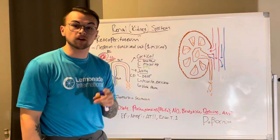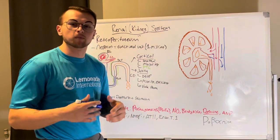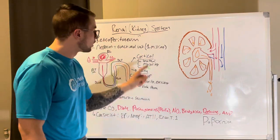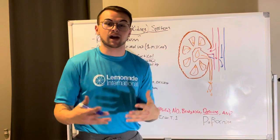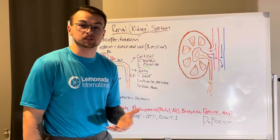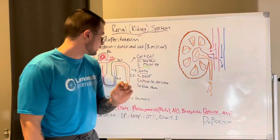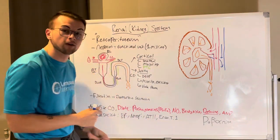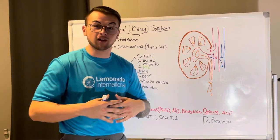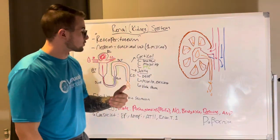There are two types of nephrons: cortical and juxtamedullary. Cortical nephrons are shallow — near the surface — and make up about 85% of our total nephrons. They have peritubular capillaries, which act as suckers: full of protein, they pull fluid back in and help us reabsorb.